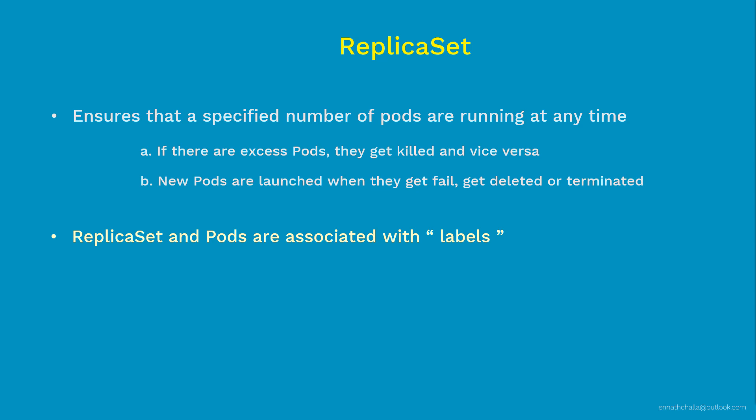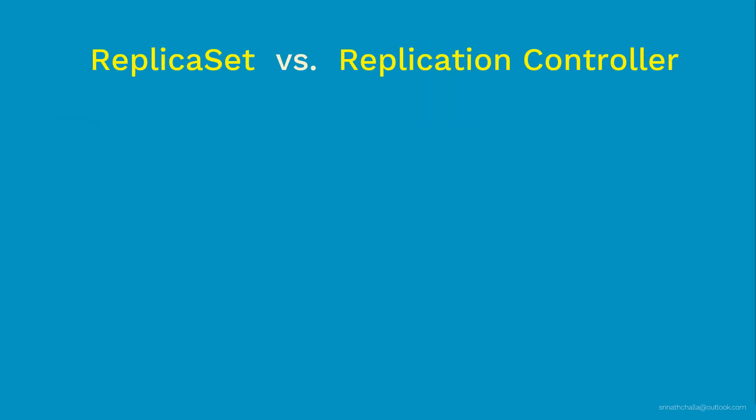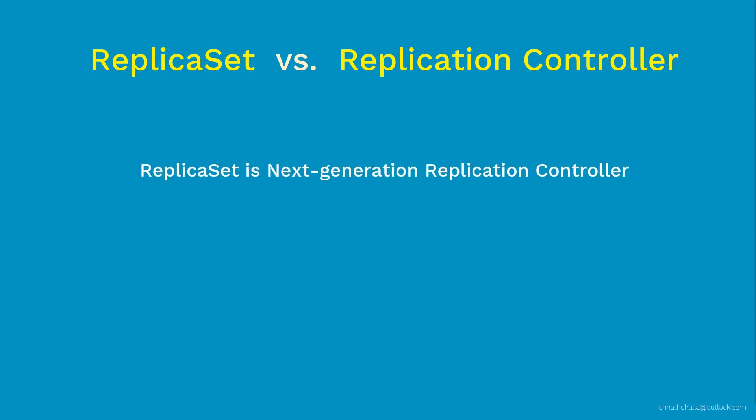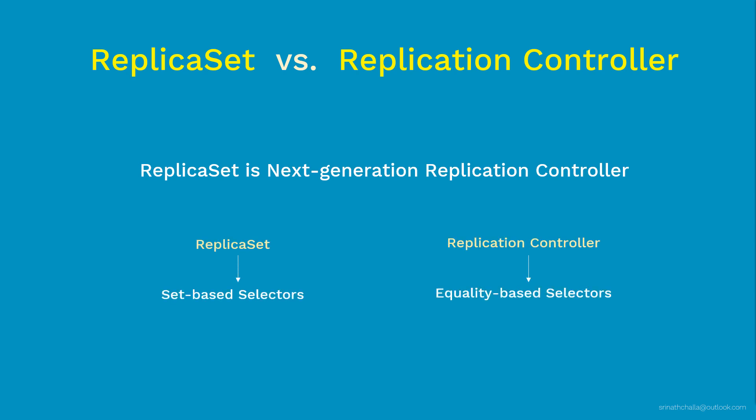Before discussing labels and selectors further, let's talk about the controller closest to ReplicaSet: the ReplicationController. What is the difference between a ReplicationController and a ReplicaSet? ReplicaSet is the next generation of ReplicationController — both have the same purpose, it's just an older versus newer version. However, the one key difference is selectors: ReplicaSet supports set-based selectors, whereas ReplicationController supports only equality-based selectors.